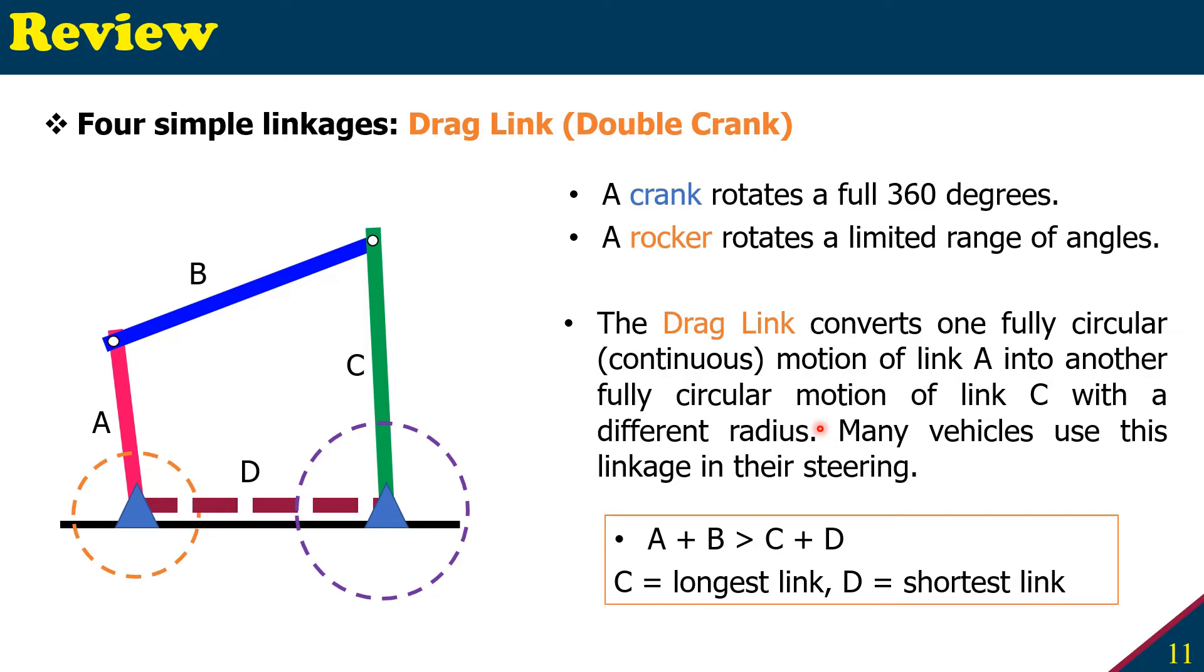Again, if we apply the Grashof's law, if C is the longest link and D is the shortest link, for double crank to happen, this D has to be the shortest. And then sum of A and B, or C and D, the longest and the shortest, is less than the sum of the other arm length.